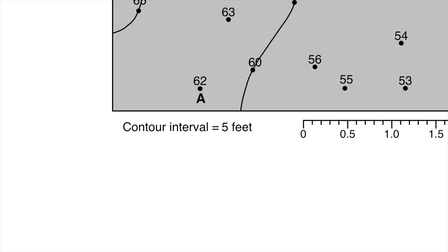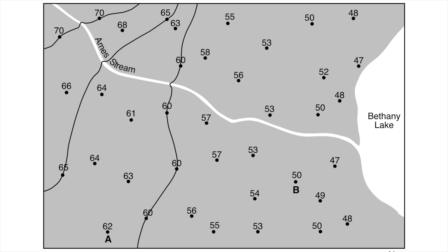Let's go back to the map. Our map gives us the contour interval — the amount of elevation change from one line to the next. On this map, the interval is five feet. That makes sense because I see a 70-foot line, then 65, then 60. So the next line I'm going to draw will be a 55-foot line, keeping with the contour interval. It would not make sense to draw a 58-foot line, as that would break the five-foot interval rule.